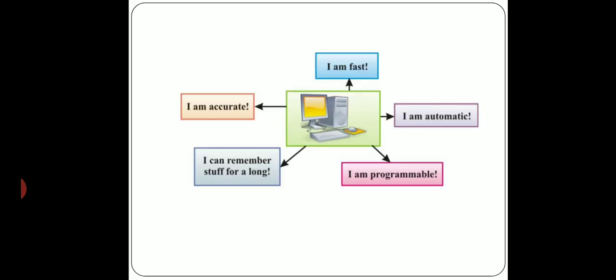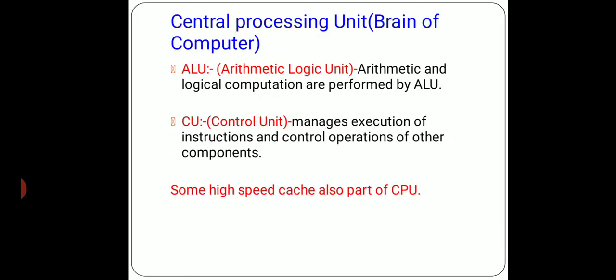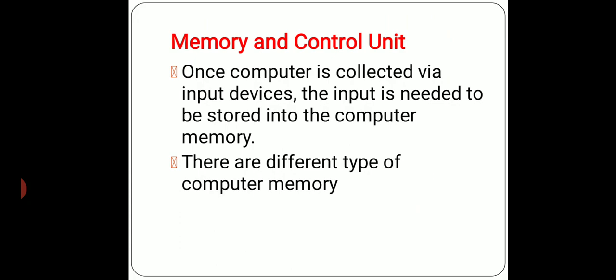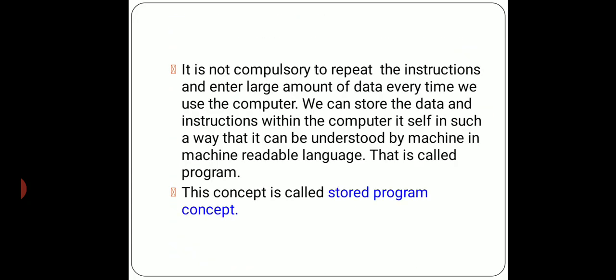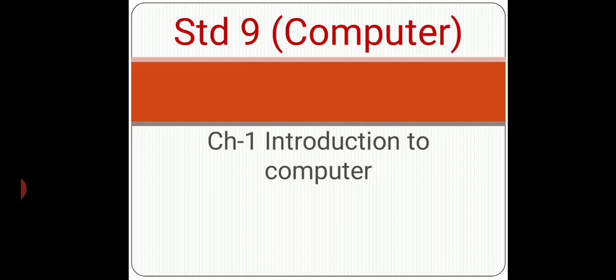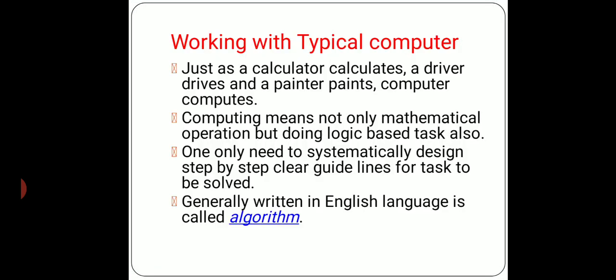Now let us revise the whole chapter. The first topic we learned is working with a typical computer. Just as a calculator works, just as a painter does painting, similarly a computer computes. A computer works not only on mathematical but also on logical instructions. Inside this, the definition of algorithm was given, which we have already discussed.